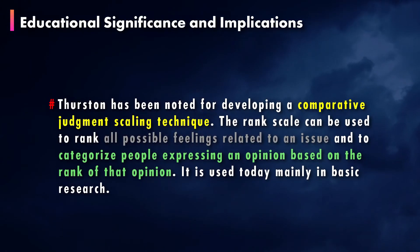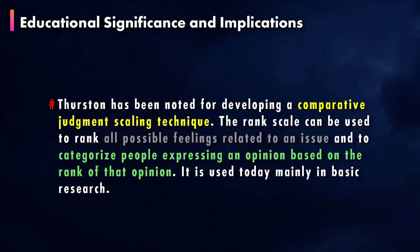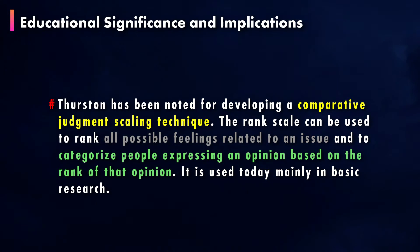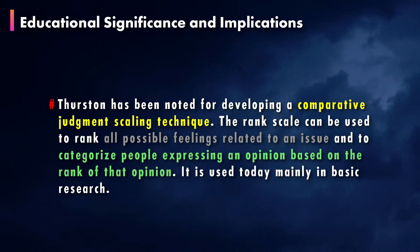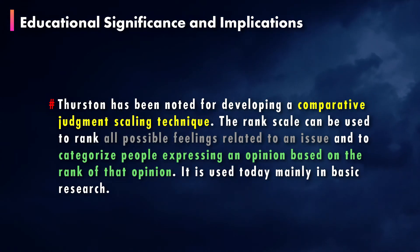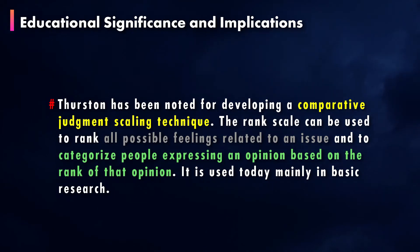Thurston has been noted for developing a comparative judgment scaling technique. The rank scale can be used to rank all possible feelings related to an issue and to categorize people expressing an opinion based on the rank of that opinion.